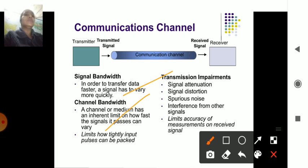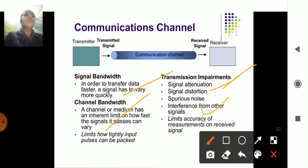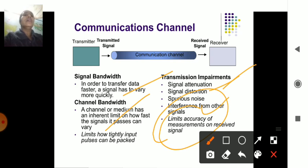The transmission medium has several impairments. Attenuation means the signal gets lower. Distortion refers to disturbances from noise. Spurious noise refers to multiple unknown noises present between signals. Interference occurs when one signal is crossed over by another. Each signal has its own accuracy limit, and limits arise because of these transmission impairments.